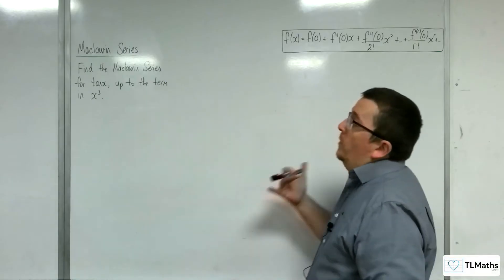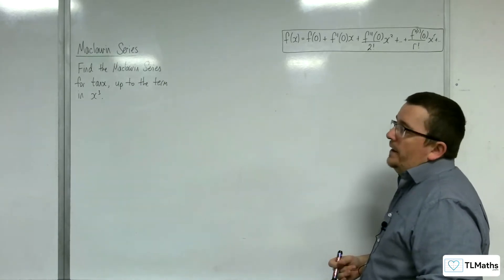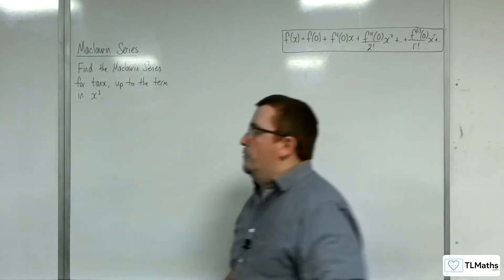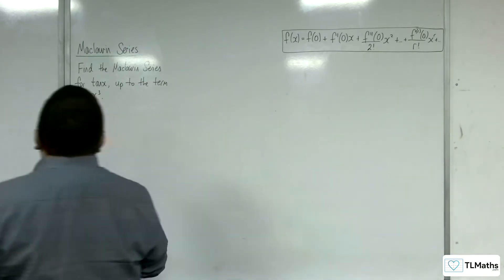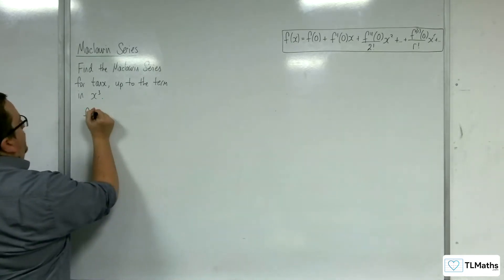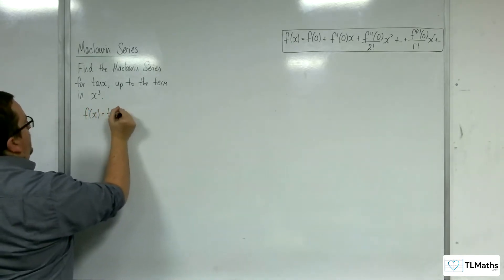So in this video, we're going to find the Maclaurin series for tan x up to the term in x cubed. So f of x is tan x.